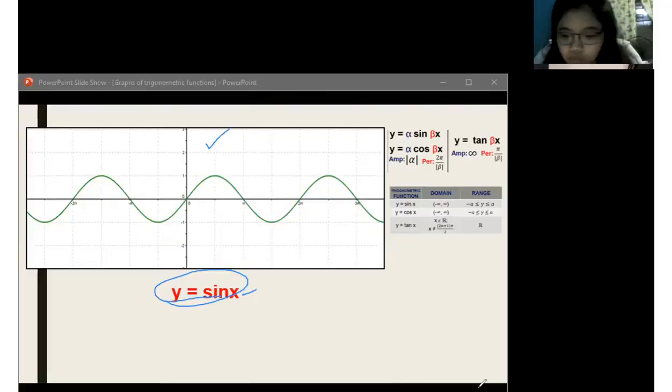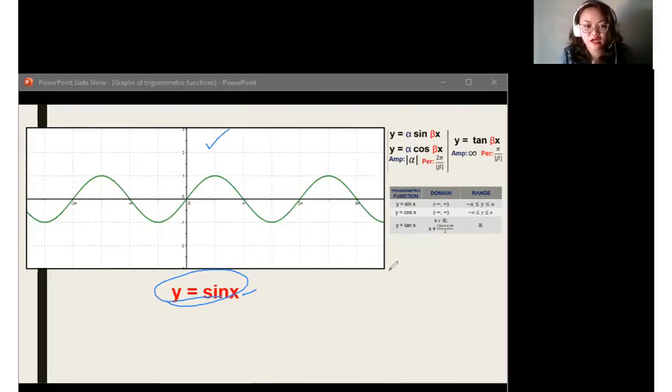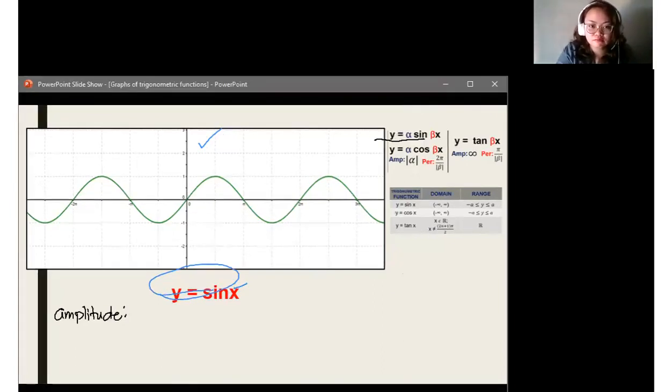Okay, we're able to type it already. Now, in our set of formulas, let's begin with identifying the amplitude. For the amplitude, we look at this formula here. You could zoom in the screen now if you cannot see it properly. So we use this formula now for sine: y equals alpha sine beta x.